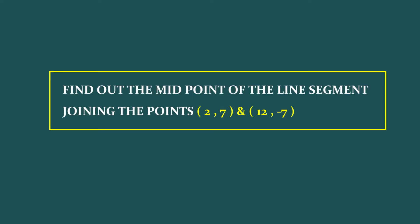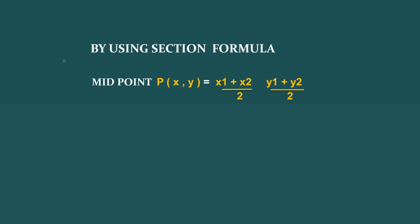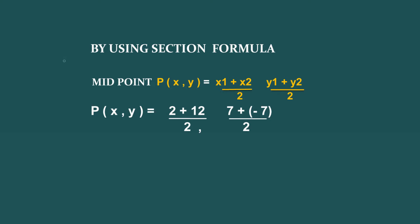Now we can solve a problem. Find the midpoint of the line segment joining the points (2, 7) and (12, -7). By using the section formula, the coordinates of midpoint P equal ((x1 + x2)/2, (y1 + y2)/2). Substituting the values, we get P = ((2+12)/2, (7+(-7))/2) = (14/2, 0/2). Hence, the coordinates of the midpoint are (7, 0).